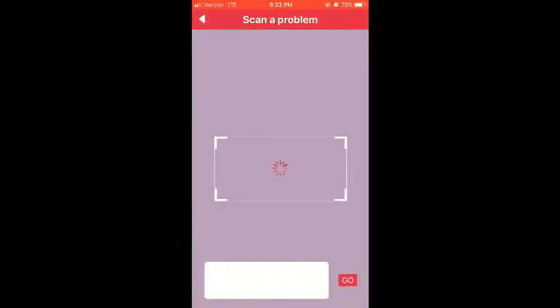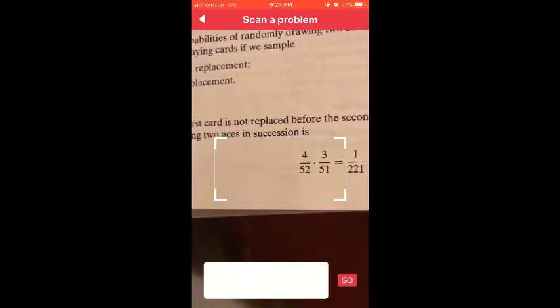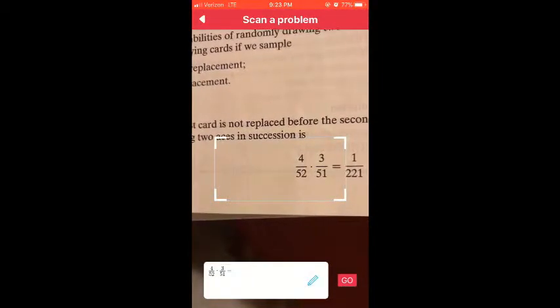Click the camera button in the top left hand corner, then move the phone so that the problem is in the square. Once the problem registers, you will see it pop up in the bottom of the screen.